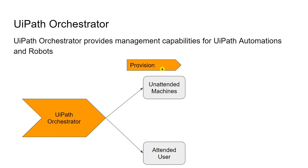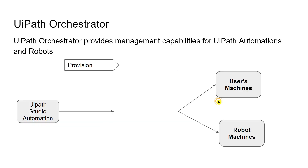The first capability is provisioning. Let's say you have a couple of machines where your automation is supposed to run. It could be attended automations where the user clicks and runs the automation, or unattended machines where the automation runs without any human user attending or logging in — it runs on a schedule. Provisioning means providing access to Orchestrator, connecting machines, and assigning licenses.